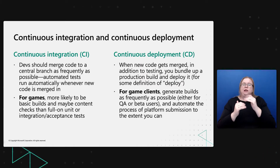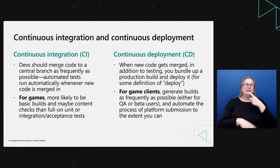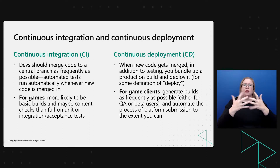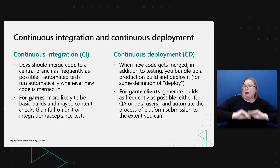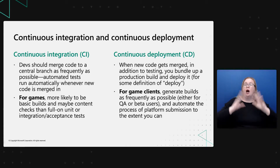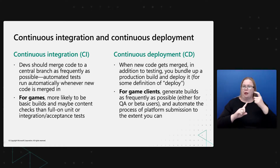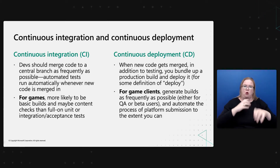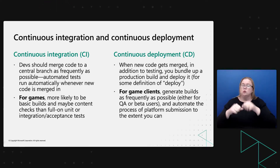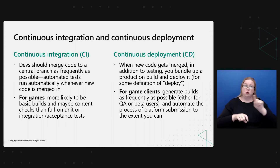The next step beyond that is continuous deployment or continuous delivery: if you're already testing code every time it comes into the main branch, so you know it mostly works, why not deploy it straight to production once it passes those tests? This makes a lot of sense for deploying server code or an HTML/JavaScript bundle for a web app. It's trickier if you're building a game client that needs to be sent to a platform holder for submission. You're not going to automatically deploy your console or mobile game every time you merge. But you're still generating builds as frequently as possible and making platform submission as automated as you can.